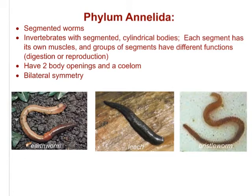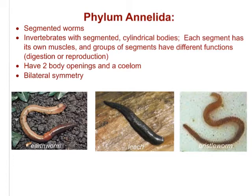Let's look at phylum Annelida. Annelids are segmented worms, and they're very special. They are invertebrates with segmented cylindrical bodies. What's interesting is that each segment has its own muscles, and groups of segments have different functions such as digestion or reproduction. Annelids have two body openings — the same as roundworms — and they are also coelomates with a coelom. They are bilaterally symmetrical. Examples include earthworms, leeches, and bristle worms.